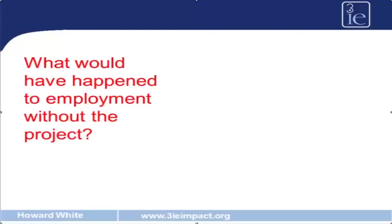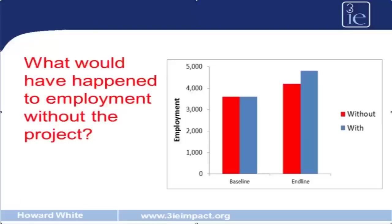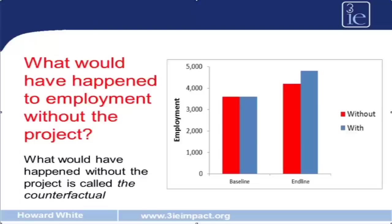But can this increase in employment be attributed to the project? No, it can't, because we don't know what would have happened in project areas in the absence of the project. The red bars in this graph show what would have happened in those areas had the project not taken place — this is what we call the counterfactual.